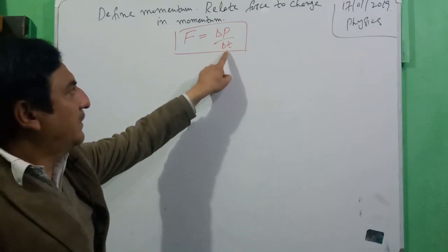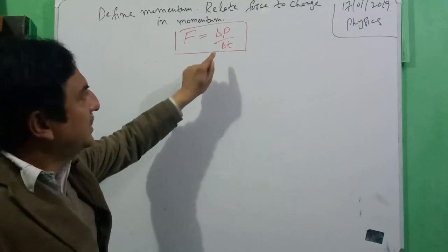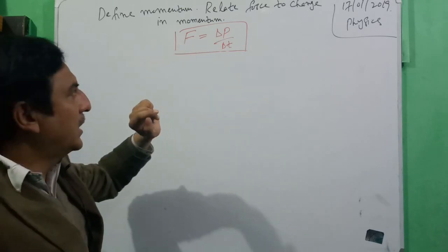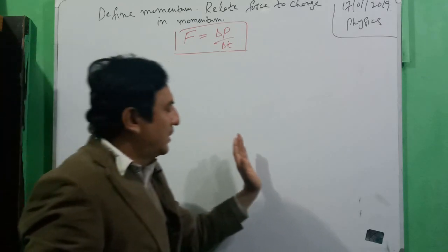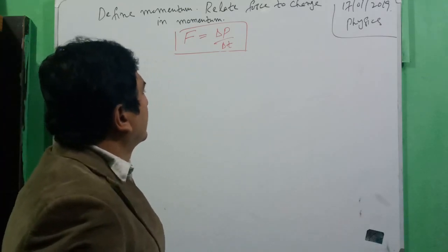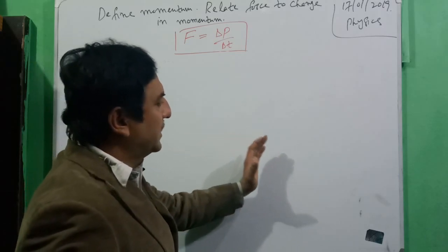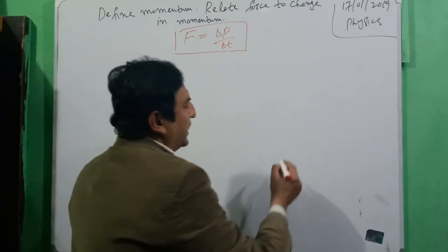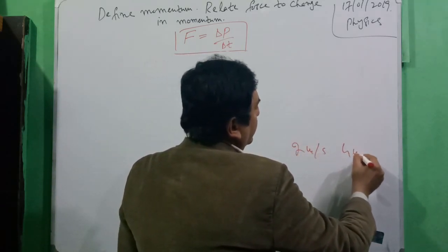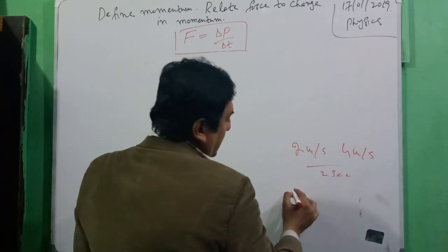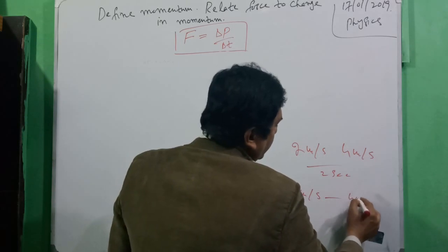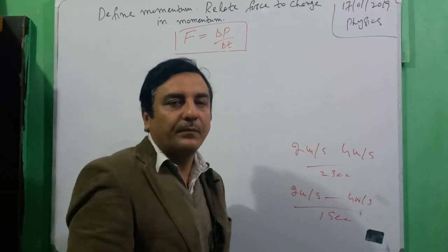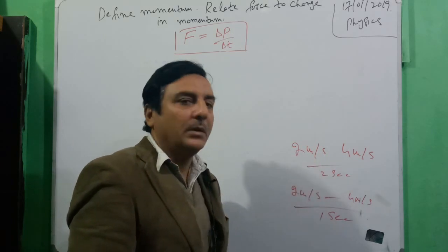The second aspect is rate of change. Rate of change means how quickly a force changes momentum — the faster the change, the greater the force applied. For example, one engine changes a car's speed from 2 m/s to 4 m/s in two seconds, while another engine makes the same change in one second. This means the second engine supplied a greater force.